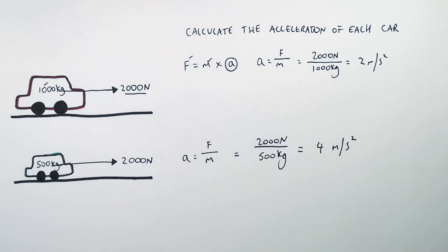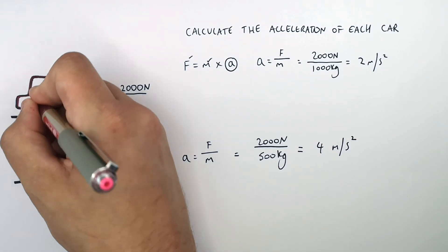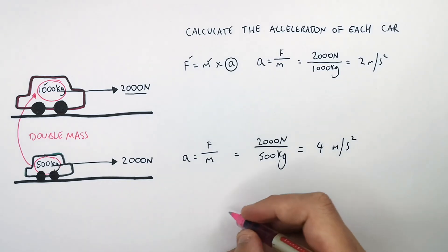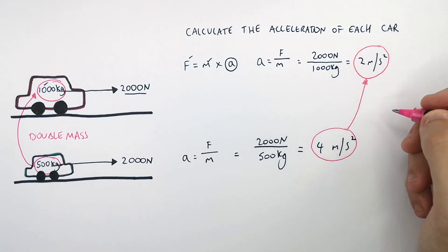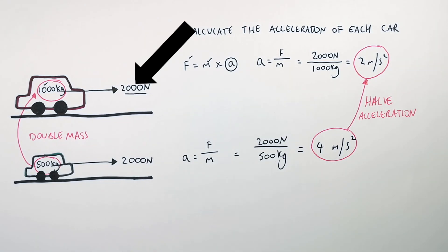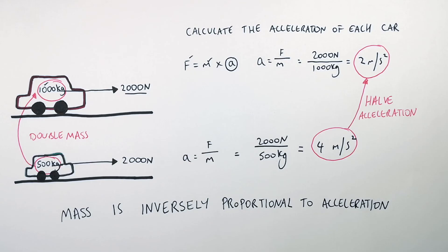So what is the relationship between the mass of an object and its acceleration? The smaller car has a mass of 500 kilograms. When you double the mass to 1000 kilograms with the same resultant force, the acceleration halves from 4 meters per second squared to 2 meters per second squared. Newton's second law states that mass is inversely proportional to acceleration: for the same resultant force, if you double the mass you halve the acceleration, and if you halve the mass you double the acceleration.